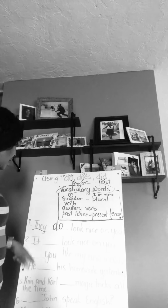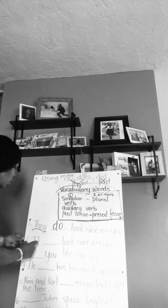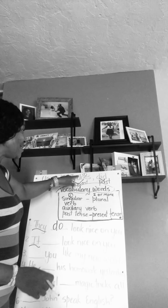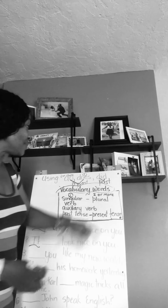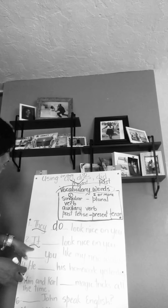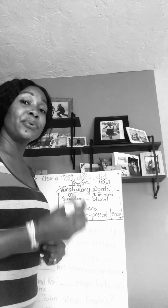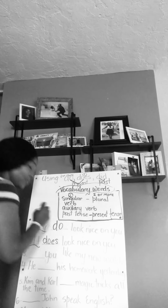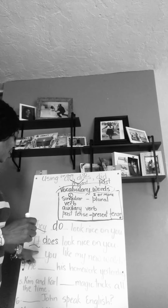Number two: 'it blank look nice on you.' We're talking about 'it,' which represents one — singular. When it's singular we use 'does,' or if it's happening in the past we use 'did.' This sentence is in the present, so the answer is: it does look nice on you.